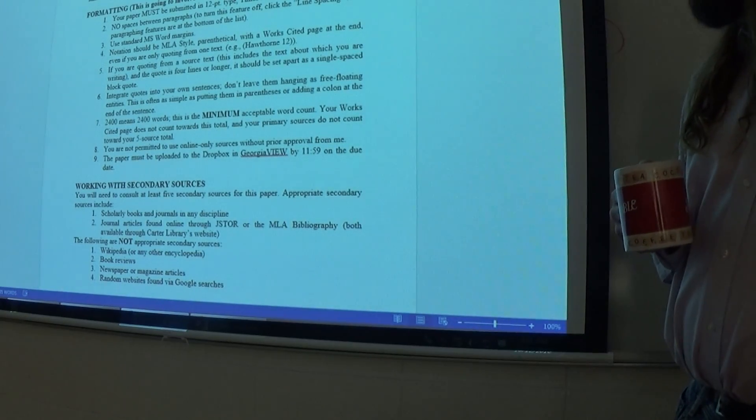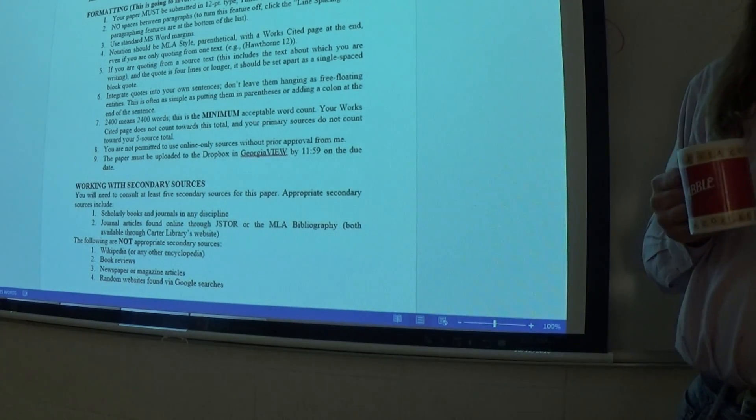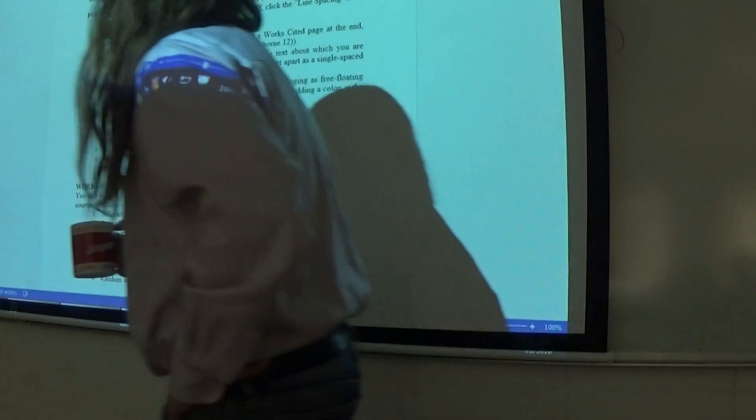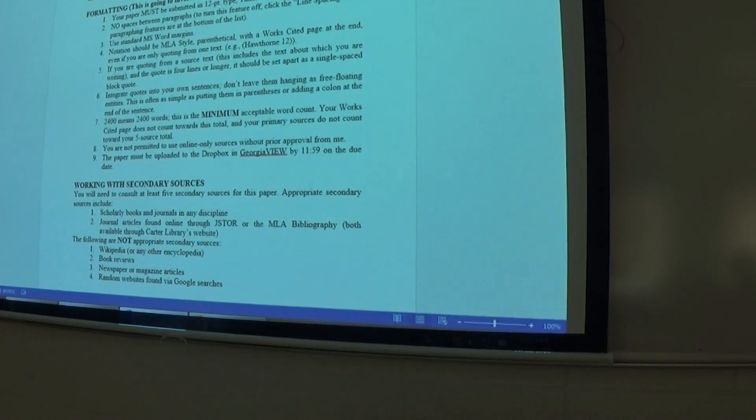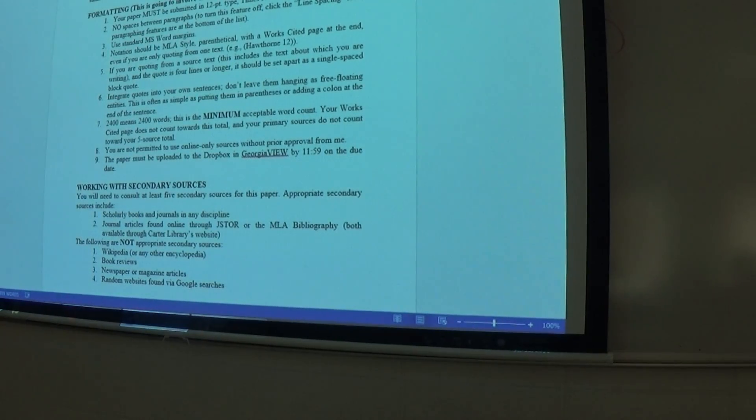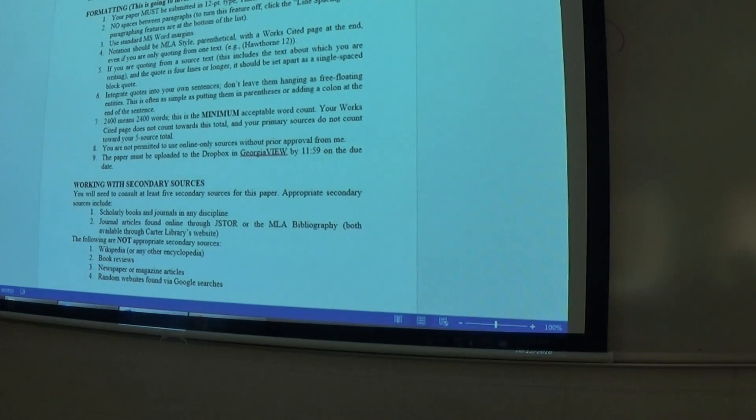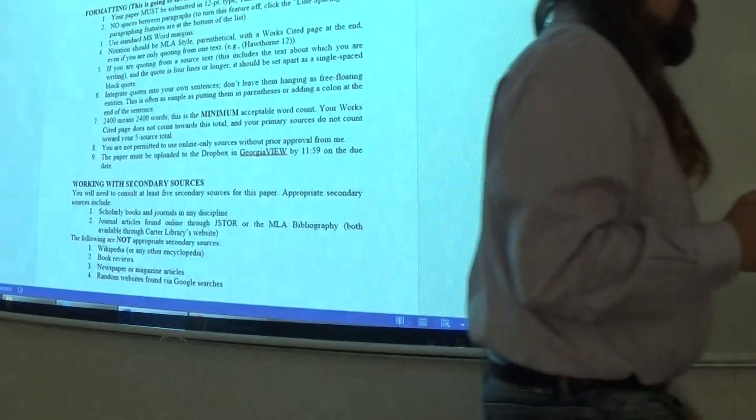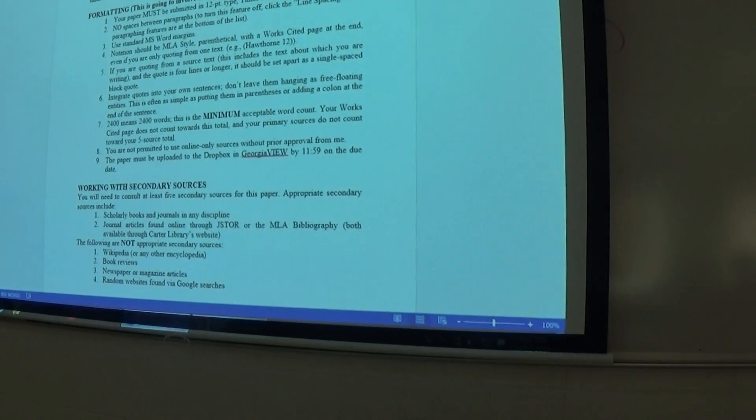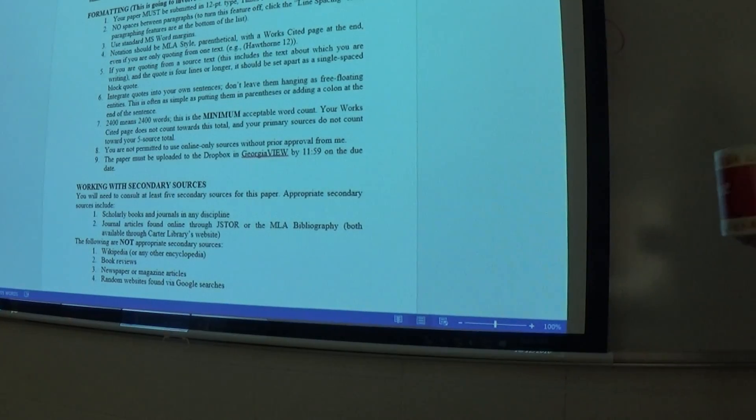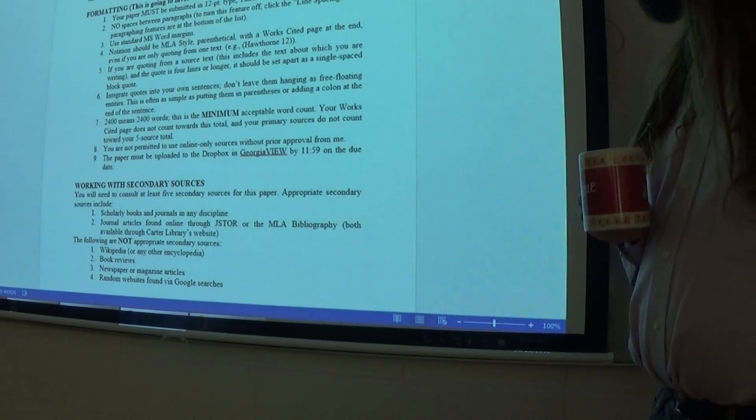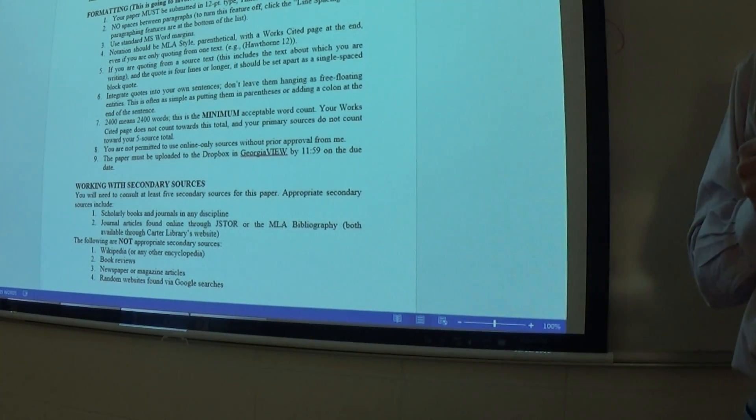You will need to consider a single work and examine the ways in which you think it develops a particular theme, paying close attention to the way it treats this common pattern, and constructing an argument as to why this pattern is important to understanding of the text you chose. You will need to use at least five outside sources.